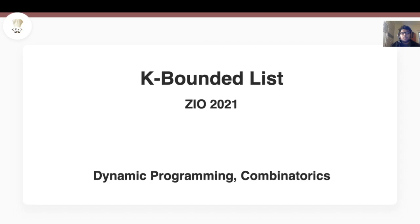Today, we're going to discuss the problem from ZIO 2021 called k-bounded list. The prerequisites for this problem are dynamic programming and very basic combinatorics, just some inclusion-exclusion stuff. Okay, so let's look at the problem statement.